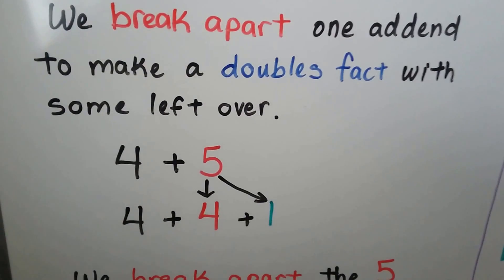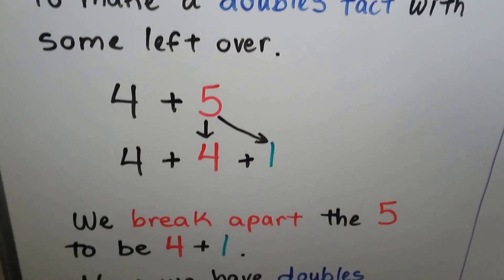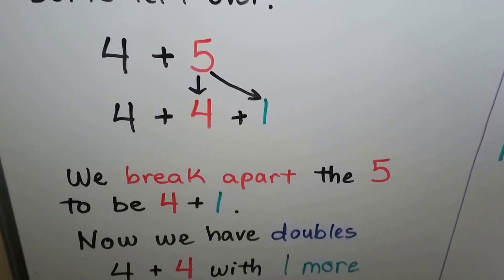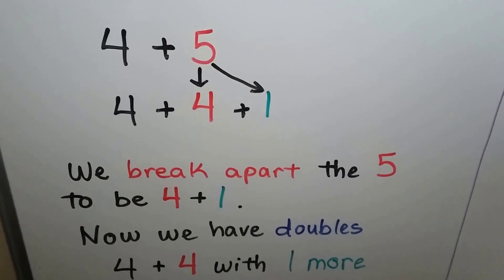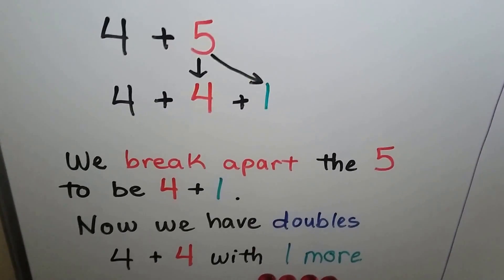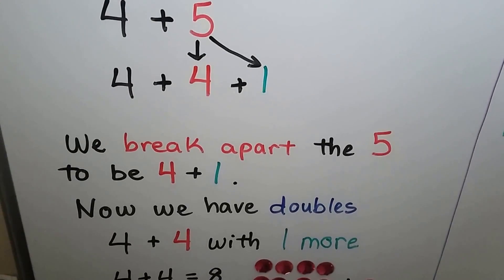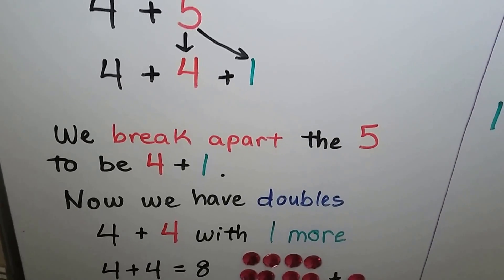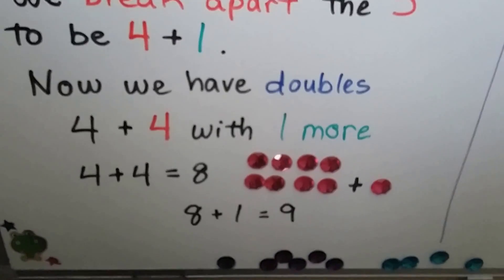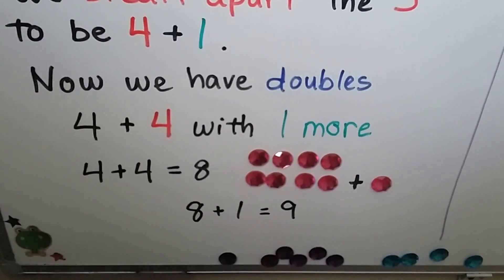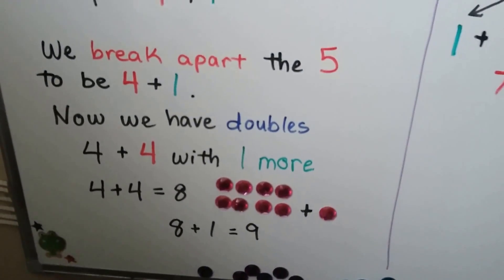We break apart one addend to make a doubles fact with some left over. 4 plus 5 turns into 4 plus 4 plus 1 — we break apart the 5 to be 4 plus 1. Now we have doubles: 4 plus 4 with 1 more. 4 plus 4 is equal to 8, plus the 1 more is equal to 9. This is very helpful if you have your doubles memorized.